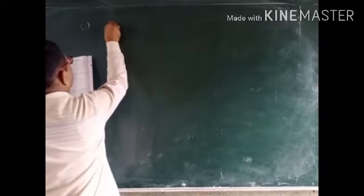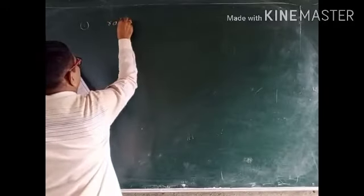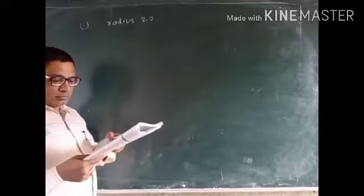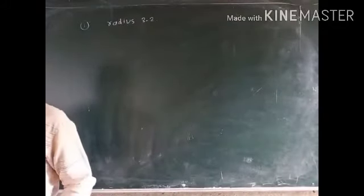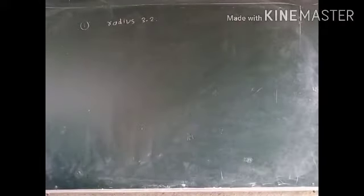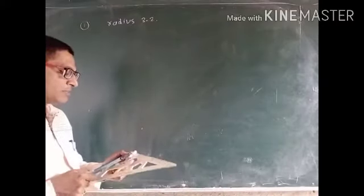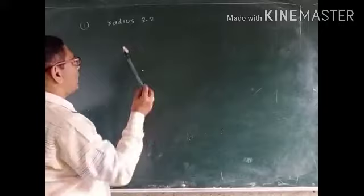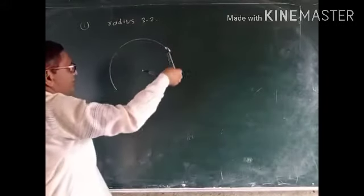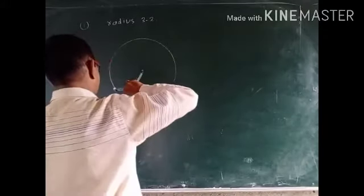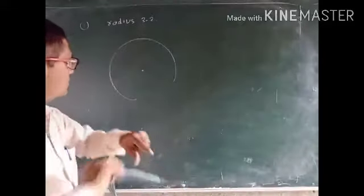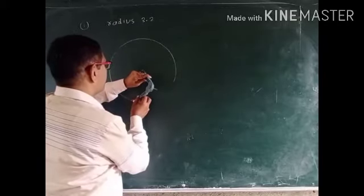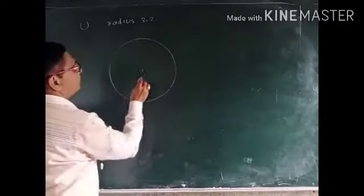In question number one, we have to draw a circle with radius 3.2 centimeters, take a point M on it, and draw a tangent from that point M. I am taking a distance of 3.2 between the two tips of the compass, fixing the center of the circle, and drawing the circle of the given radius.